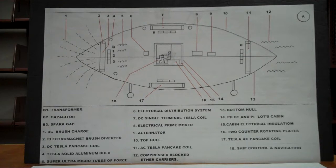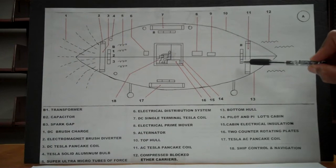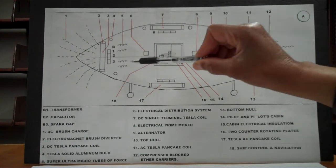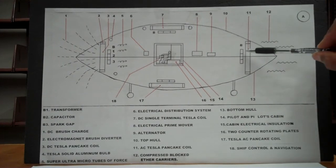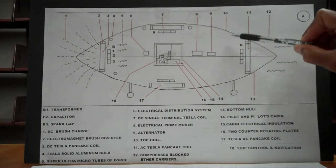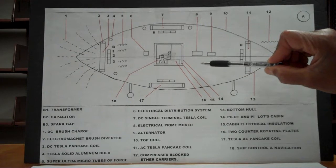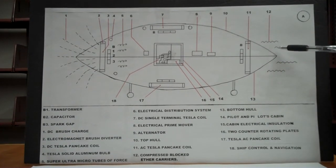The AC compresses and blocks the ether carriers, and it also blocks the tubes of force from going through the back of the ship. It turns these tubes of force around and dissolves those tubes of force throughout the ship. Number twelve: even though the AC does not let the ether carriers or the tubes of force through, it lets the rigidified ether pass by.